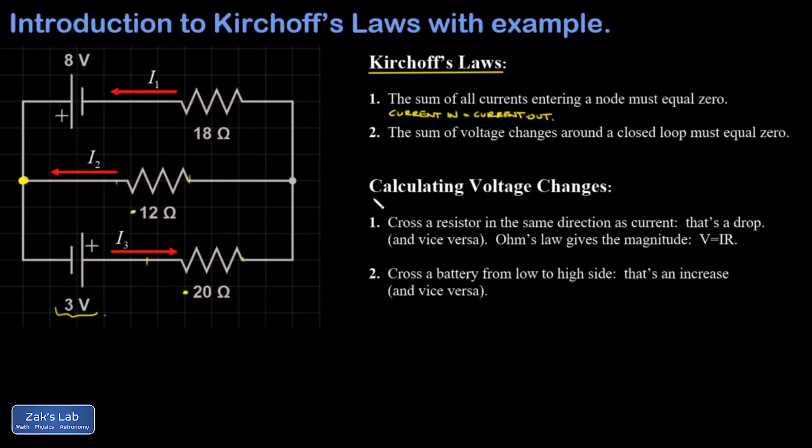A little bit of detail on calculating voltage changes as you traverse one of these loops in a circuit. If you cross a resistor in the same direction as the current, that's a voltage drop because current goes from the high side of a resistor to the low side. And the other way around, if you cross the resistor in the opposite direction of the current, that would be a voltage increase. How do you get the magnitude of a voltage change across the resistor? You just use Ohm's Law, V equals IR.